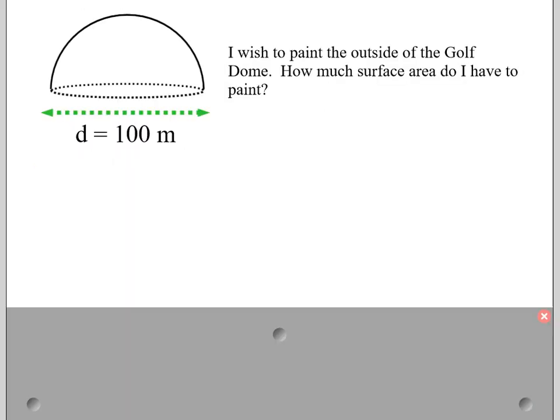If I wish to paint the outside of the golf dome, how much surface area do I have to paint? Well, the full surface area would be 4 π r squared. But I don't want the full, I want half. So I'm going to take that value and divide it by 2. If I look at my diameter of the golf dome, it's 100 meters. That means my radius is 50 meters.